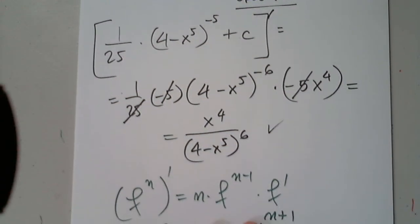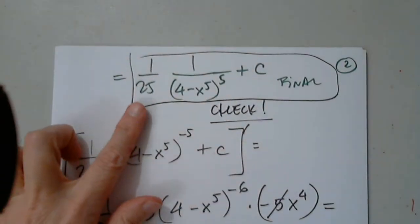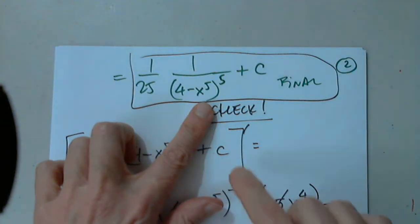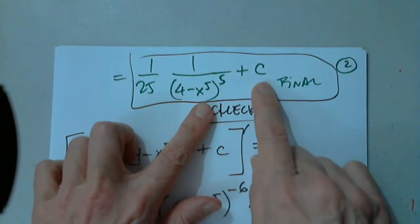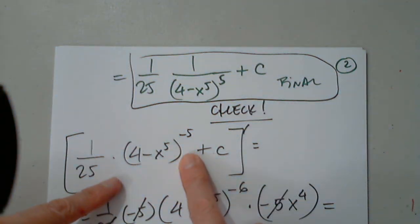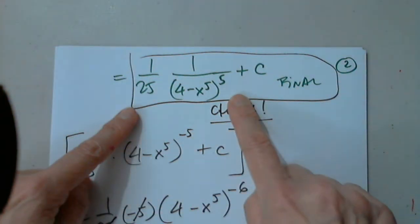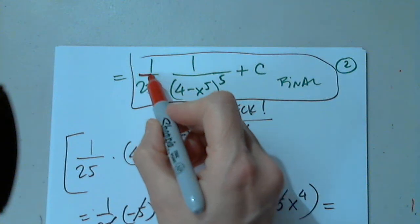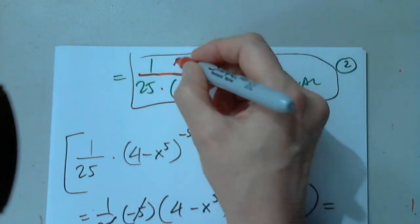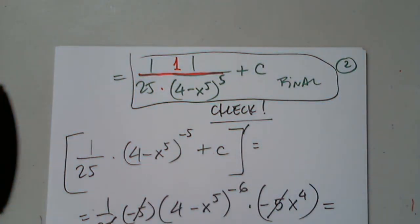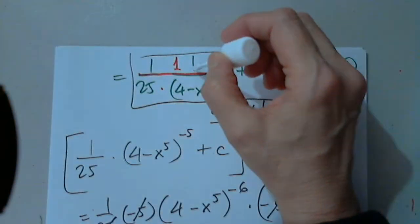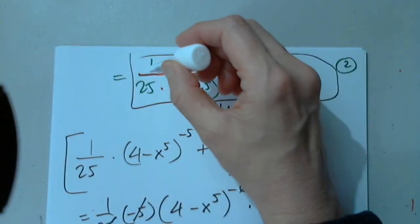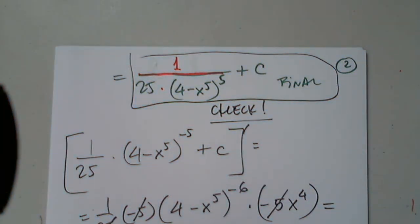Student asks: could you also write the final answer as one over 25 times four minus x to the power of five, all to the power of five, plus C? You mean write it as one fraction with a multiplication symbol? Yes, of course. You can have one fraction line, multiplication symbol here, and one at the top. I left it the way I did because I wanted to verify anyway, but of course you can combine them.